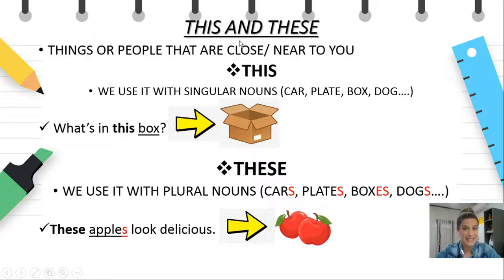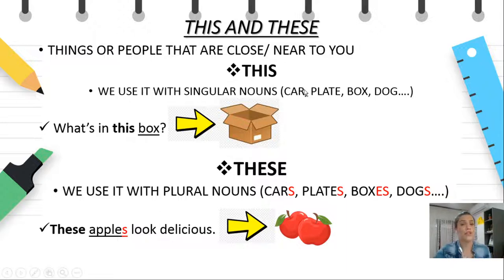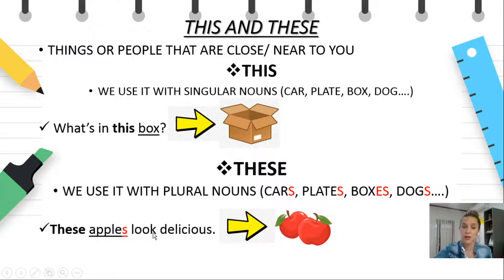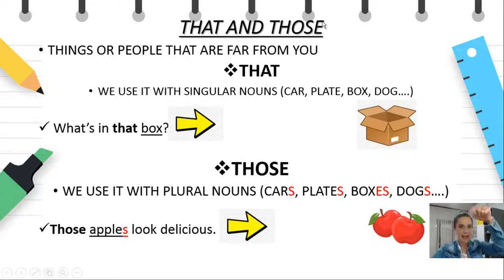Let's revise 'this' and 'these.' We use 'this' and 'these' for things or people that are close or near to you. We use 'this' only with singular nouns, such as car, plate, box, dog — things or people near to me. For example: What's in this box? The box is close to the arrow. On the other hand, we have 'these,' which is again for things or people near to me, but only with plural nouns, such as cars, plates, boxes, dogs. For example: These apples look delicious — the apples are near the arrow.